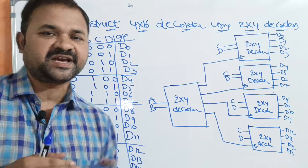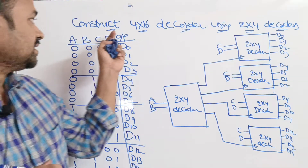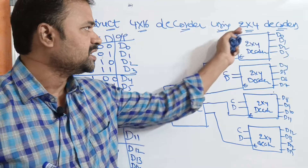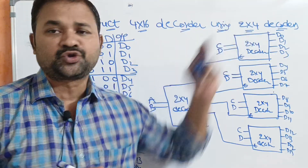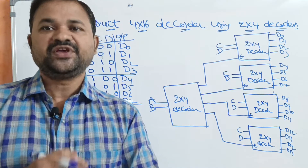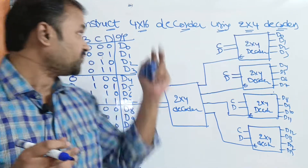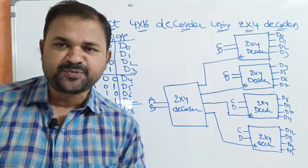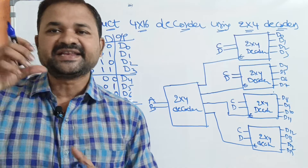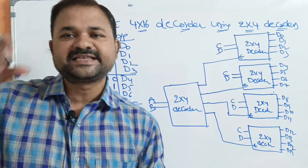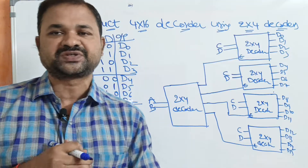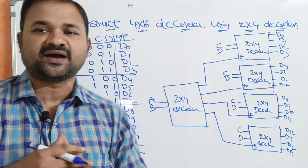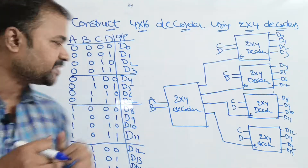Let us discuss constructing a 4 by 16 decoder using 2 by 4 decoders. We know that a 4 by 16 decoder has 4 inputs and produces 16 outputs. First, let us see the truth table for the 4 by 16 decoder.